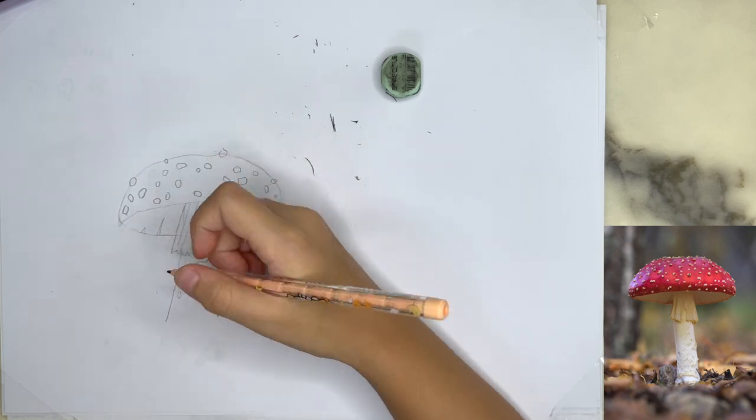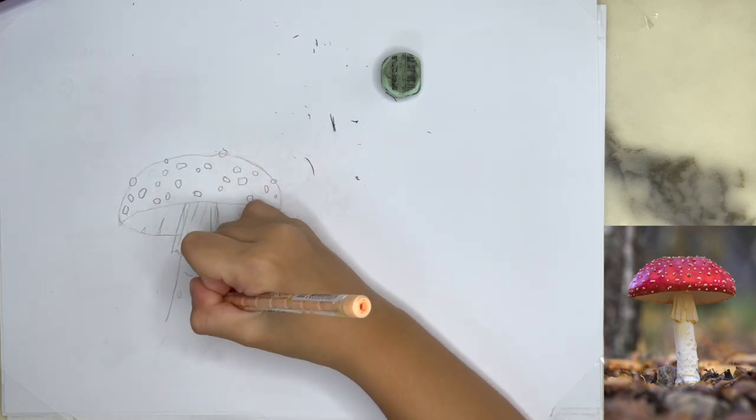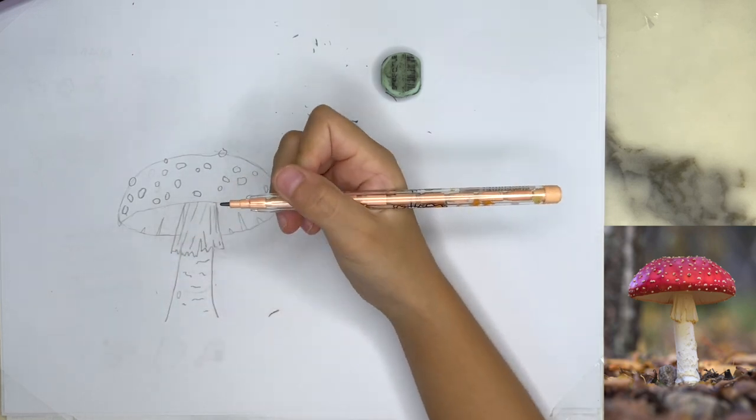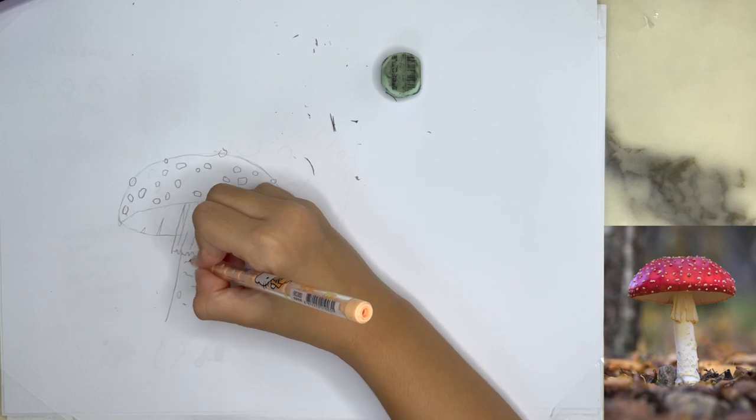Stem needs some texture. The good thing about a mushroom is that there is no need for symmetry or perfection. Just draw on something here to make it look natural.